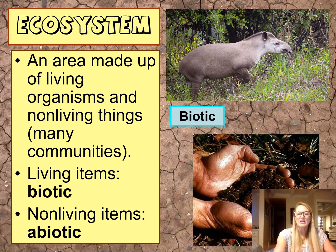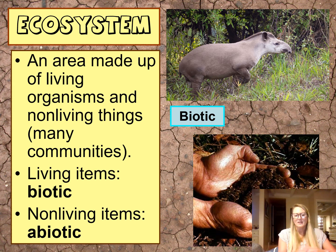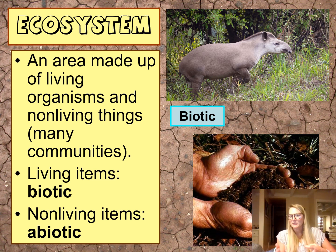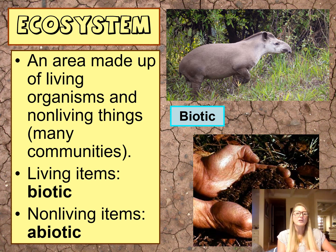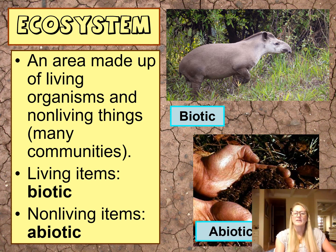The living components in an ecosystem we call biotic, and the non-living components we call abiotic — not living. For example, a tape worm is obviously living, so that would be called a biotic factor. But if you look at something like soil — excluding the worms and bacteria living in it — just the dirt itself would be considered an abiotic factor because it's not living.